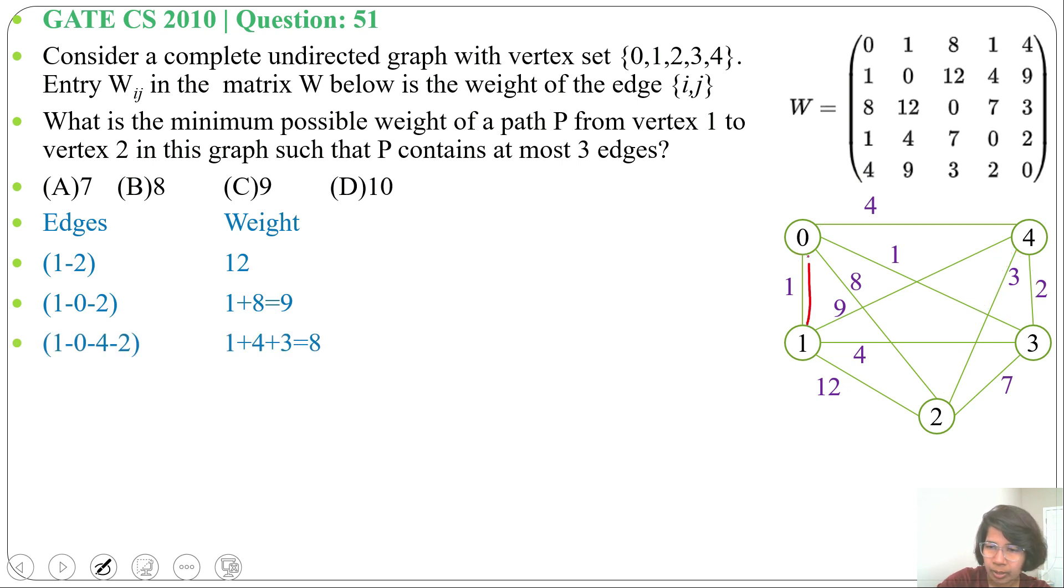You can also try 1 to 0, then from 0 to 3, then from 3 to 2. So 1 plus 1 plus 7, it will be 9. So minimum we are getting 8 by using at most 3 edges: 1 to 0, 0 to 4 and 4 to 2.